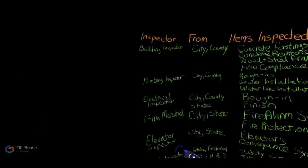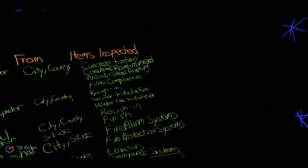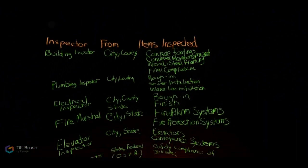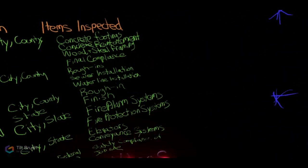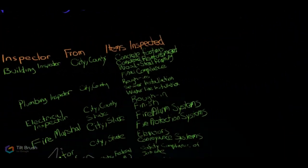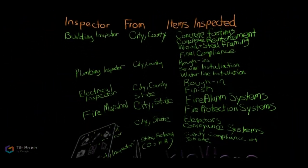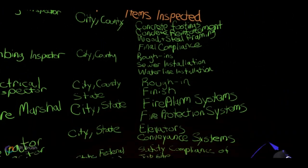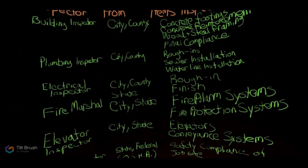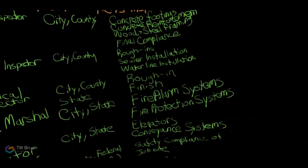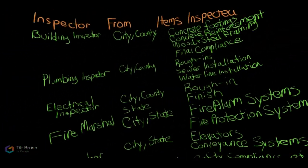The fire marshal is from the city and state. They inspect the fire alarm systems, which can be low-voltage systems or hardwired into the electrical panel — they always have backup systems and batteries, so the marshal wants to make sure backup systems are working. The fire protection systems include the sprinkler systems, making sure there are enough sprinkler heads in the right spots. They also inspect fire extinguisher locations and make sure there are enough on site.